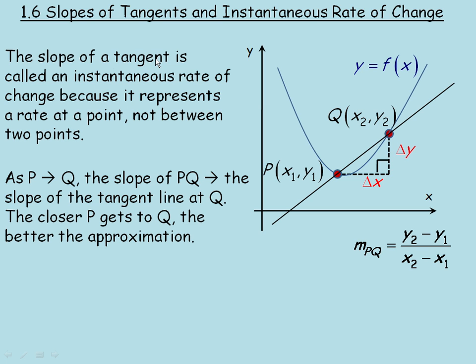The slope of a tangent line is called an instantaneous rate of change because it represents how fast something is changing at a single point or at a point in time, not between two different points or two different points in time.